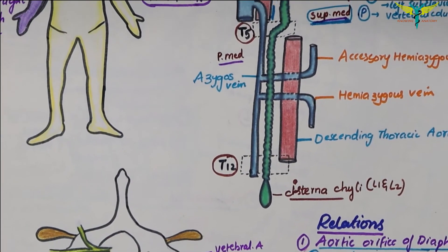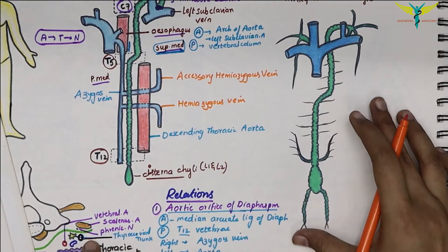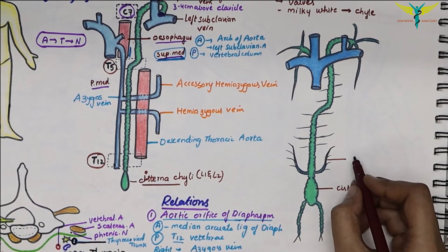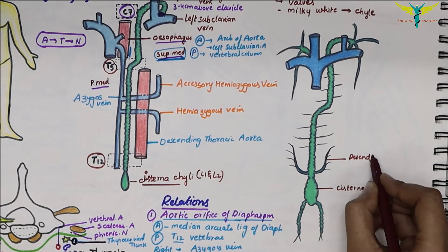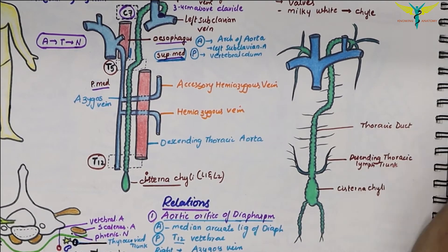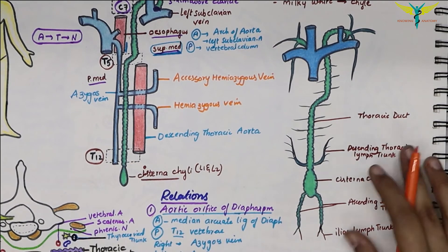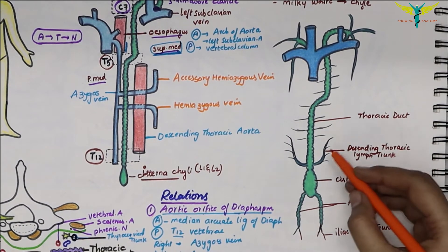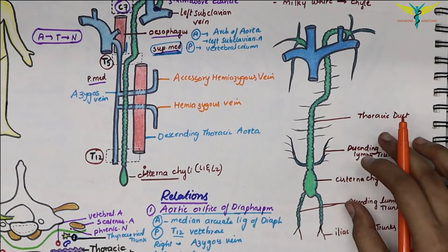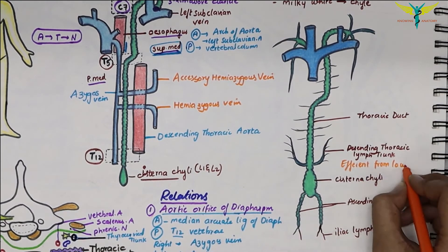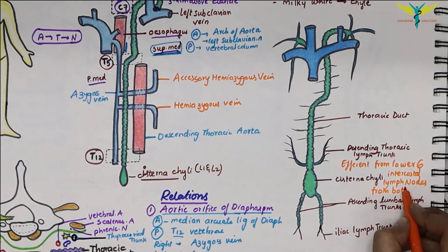Now let's look at the tributaries of the thoracic duct. The diagram shows the cisterna chyli, the descending thoracic lymph trunk, the thoracic duct, the ascending lumbar lymph trunks, and the iliac lymph trunks. In the abdomen, the efferents from the lower six intercostal lymph nodes on both sides drain into the thoracic duct.